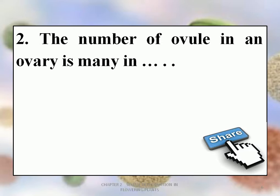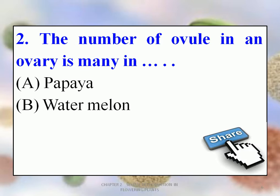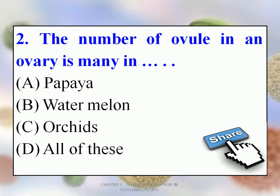Second question: the number of ovules in an ovary is many in: A. Papaya, B. Watermelon, C. Orchids, D. All of these. The correct option is D — all of these. Just as paddy, wheat and mango were examples of a single ovule-containing ovary, papaya, watermelon and orchids are examples of a multi-ovule-containing ovary.